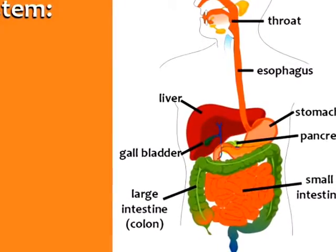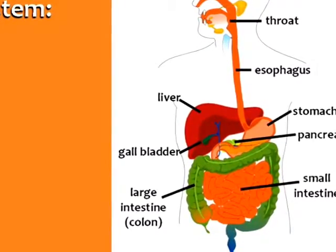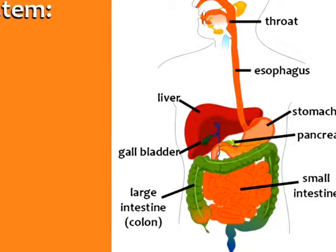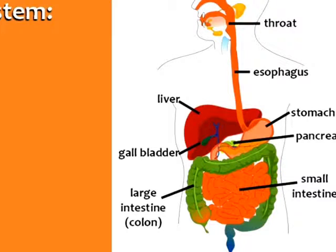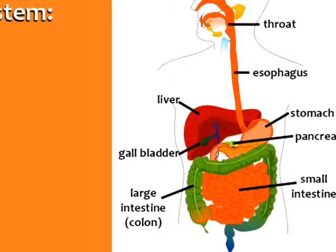Now let's look at the digestive system. When you eat, food goes into your mouth, passes through your throat, and goes down your esophagus. The food is digested in your stomach, then passes through your small intestine and large intestine before being eliminated from the body.